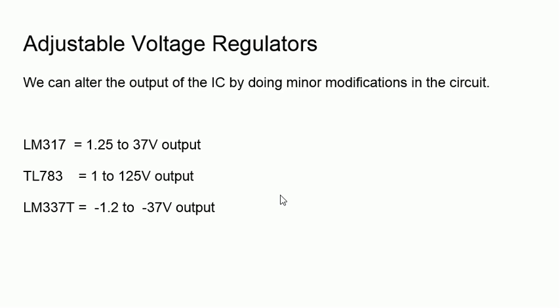The voltage levels for LM317 is 1.25 to 37 volts. TL783 will be 1 volt to 125 volts - high volt, up to 124, 125 volt is the output. In contrast to those things, LM337 will give the negative adjustable voltage level, that is minus 1.2 to minus 37 volt is the output of that IC.